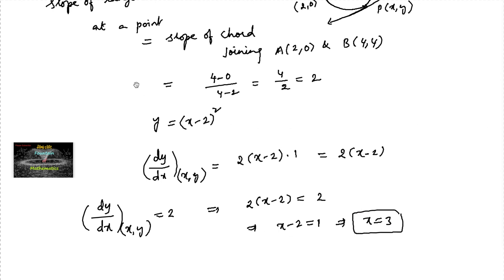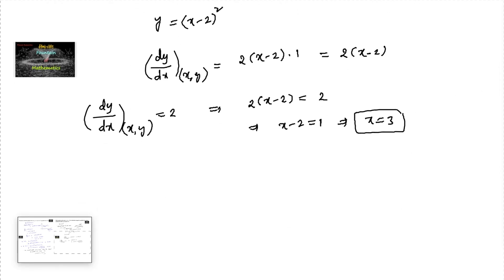Now at x = 3, the value of y can be substituted in the given function. y = (3 - 2)² at x = 3. We have (3 - 2)² is 1² which is equal to 1.